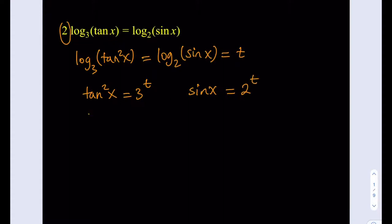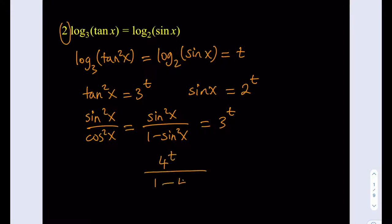Now I can write tangent squared as sin squared over cosine squared, which can be written as sin squared over 1 minus sin squared. This is good because now I can replace sin x with 2 to the power t. So that's going to give me 2 to the power t squared, which is 4 to the power t, divided by 1 minus 4 to the power t. Sin squared x is 2 to the power t squared, which is 4 to the power t. And this equals 3 to the power t.